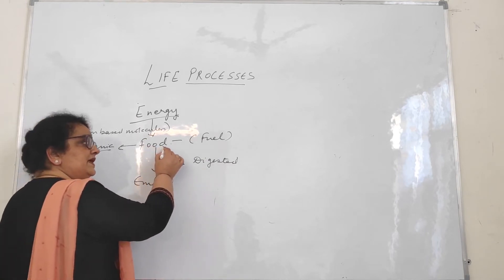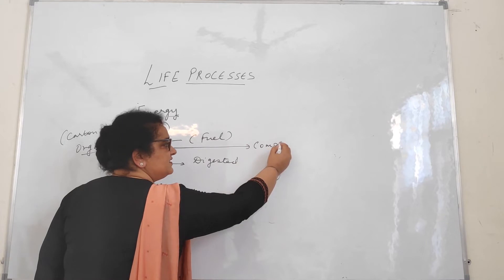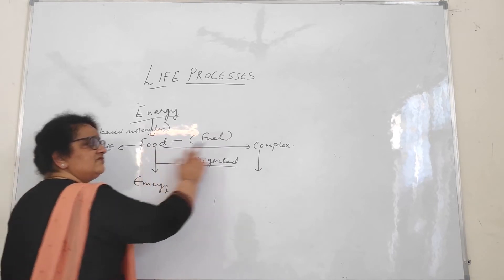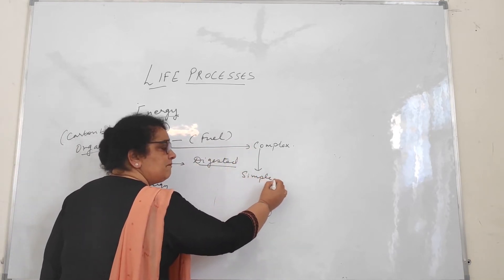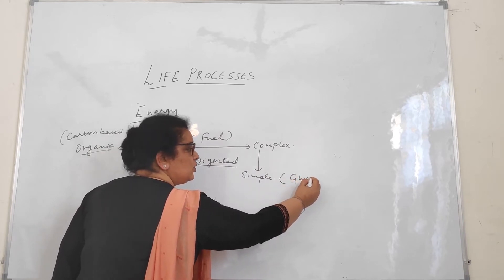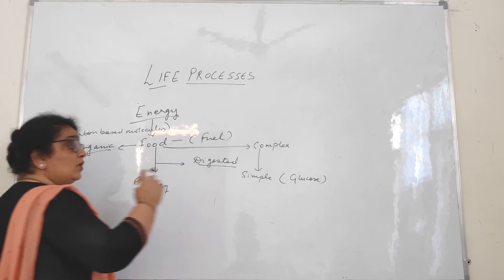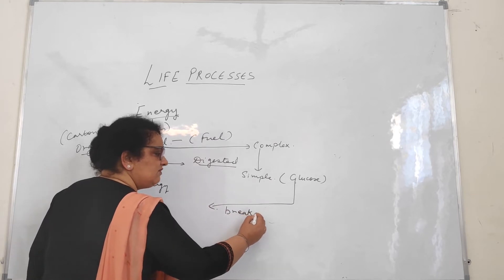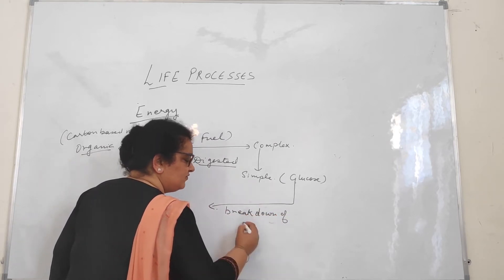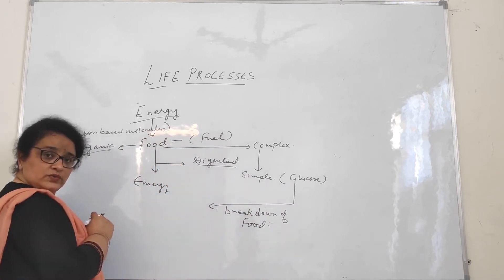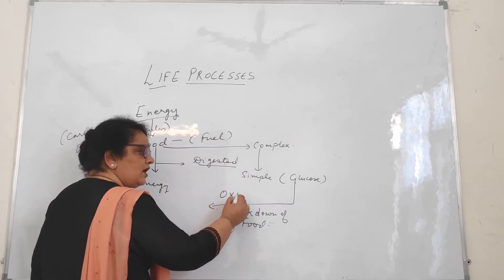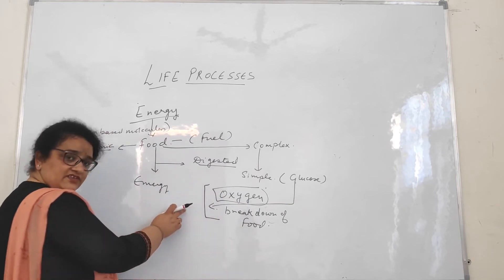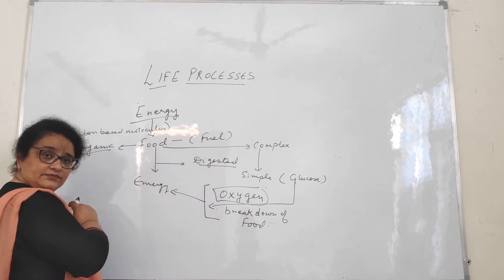Food may be in different forms — we can call it complex food. It has to be digested to convert the complex form of food into a simpler form, which we call glucose — the simplest carbohydrate. This glucose has to be broken down, and for this breakdown of food, for the breakdown of glucose, we require oxygen. So: oxygen plus food breakdown releases energy.